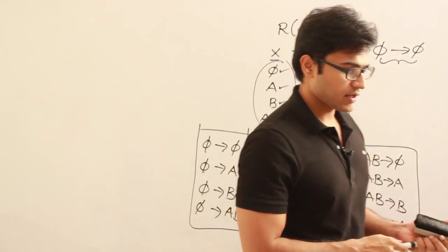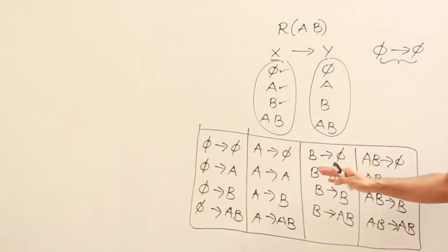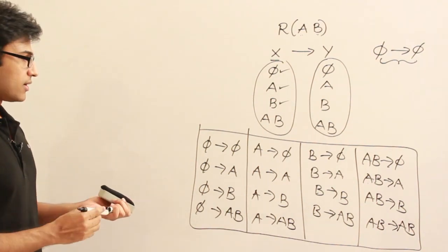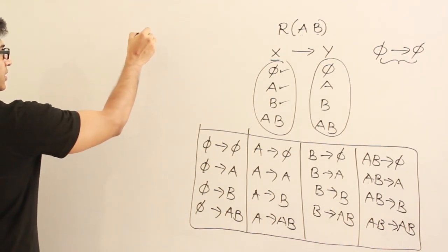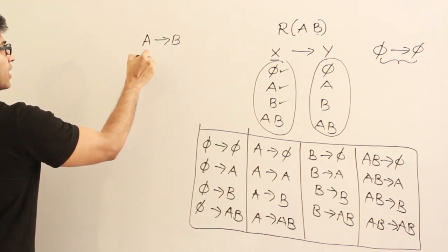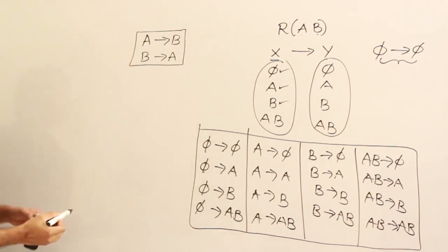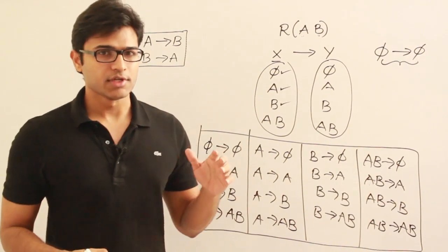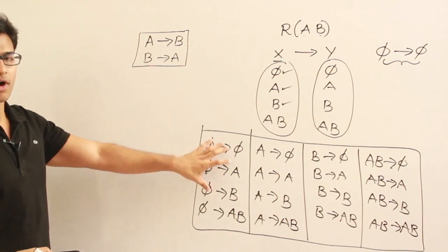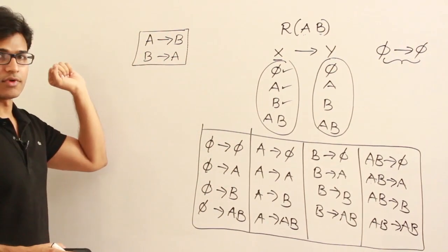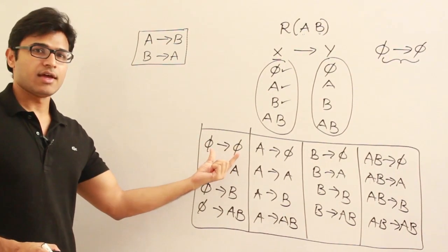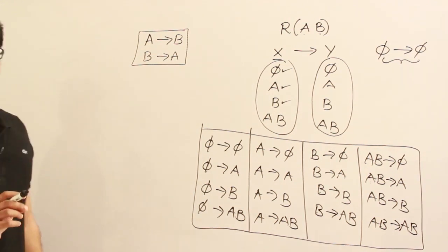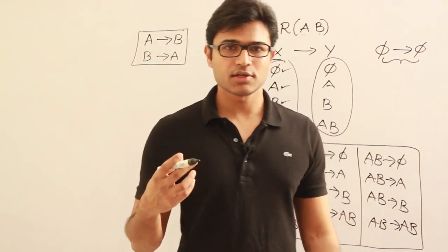From the meaning of the database we generally get some functional dependencies, and then to find additional ones we check which FDs can be derived from the existing set. For example, suppose on this table we have A→B and B→A from the database semantics. To find additional derivable FDs, we take each of the 16 possibilities and test them. We use the closure of a set of attributes — this is another application of closure beyond finding candidate keys.